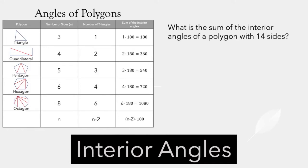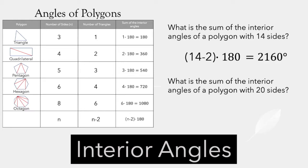Let's try this a couple times. What's the sum of the interior angles of a polygon with 14 sides? We just take 14, subtract two, and multiply that times 180. So a polygon with 14 sides — all the angles on the inside add up to 2160 degrees. What's the sum of the interior angles of a polygon with 20 sides? Same process: 20 minus 2 times 180 equals 3240 degrees inside a polygon with 20 sides.